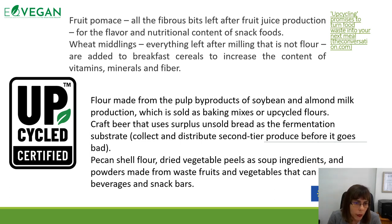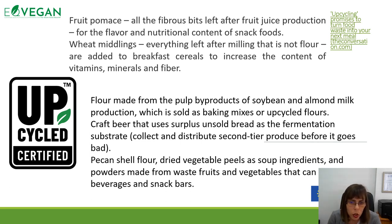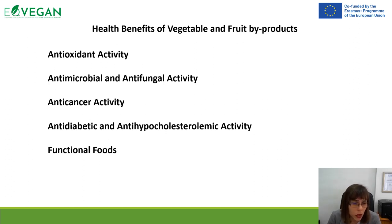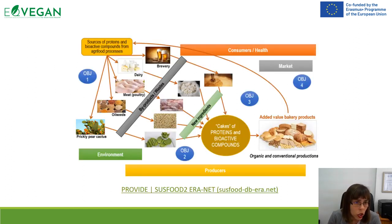Additional examples include pecan shell flour, dried vegetable peels as soup ingredients, and powders made from fruit and vegetable waste that can be added to beverages or snack bars. We have different examples of health benefits from vegetable and fruit byproducts, including antioxidant activity, antimicrobial and antifungal activity, anti-cancer activity, and anti-diabetic properties. There is also significant potential in producing protein-enriched foods.